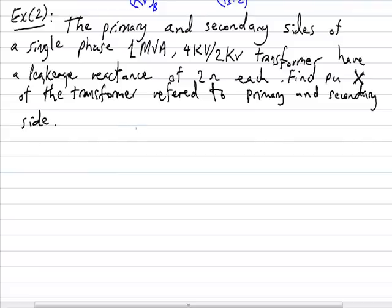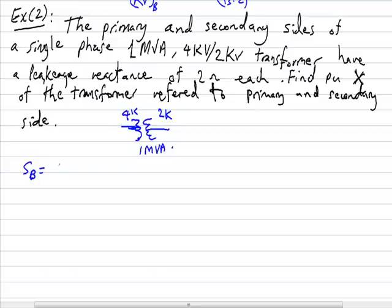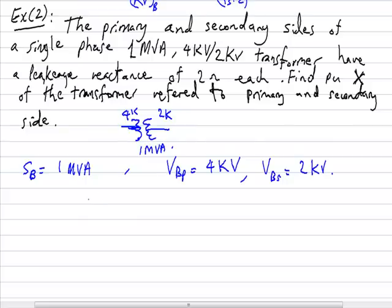As in the first example, we take the rated values of this transformer as the base values. The transformer steps down from 4 kV (primary) to 2 kV (secondary), and it is rated at 1 MVA. Therefore: the apparent power base is 1 MVA, the primary base voltage V_base_primary is 4 kV, the secondary base voltage V_base_secondary is 2 kV. The primary leakage reactance is 2 ohm and the secondary leakage reactance is also 2 ohm.